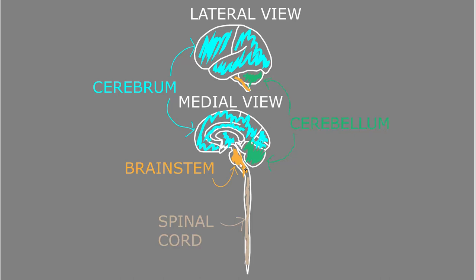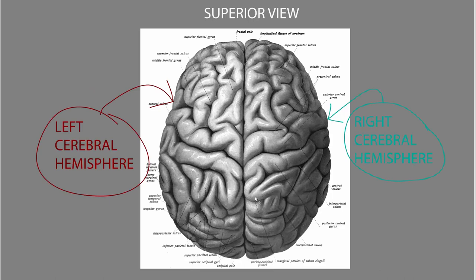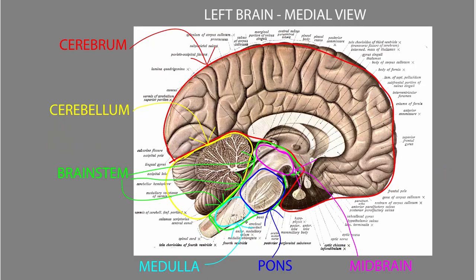The brainstem is the part of the brain connected to the spinal cord below it. The cerebrum — that top part of the brain — is divided into bilateral cerebral hemispheres, with a left and a right cerebral hemisphere. The brainstem is divided into three sections: the midbrain, the pons, and the medulla.